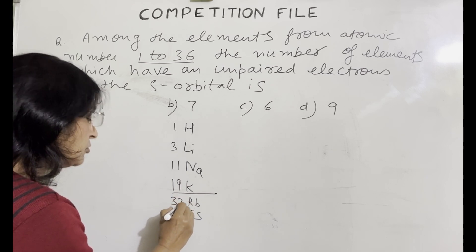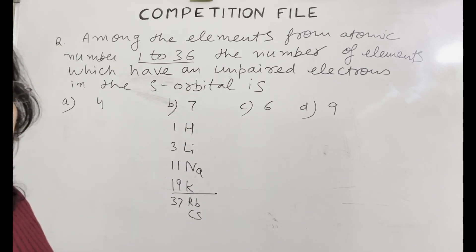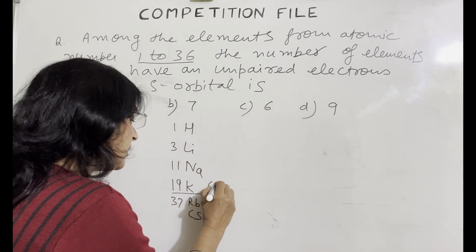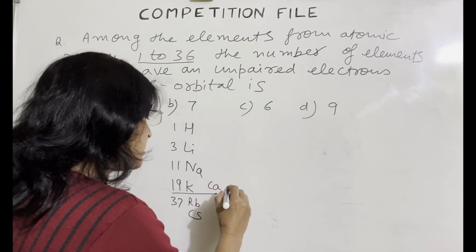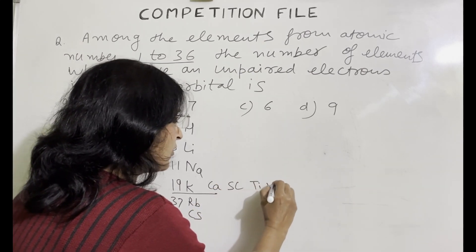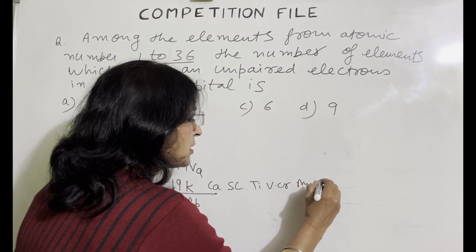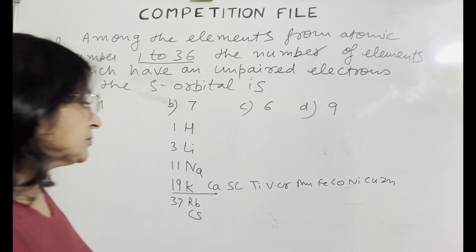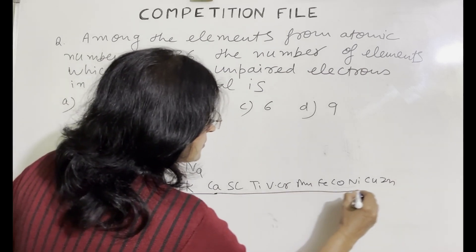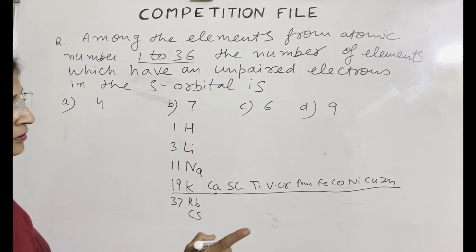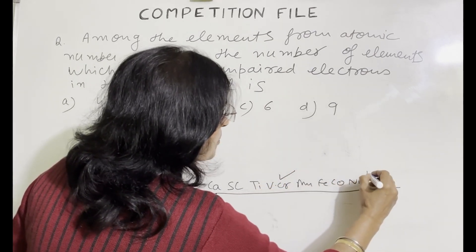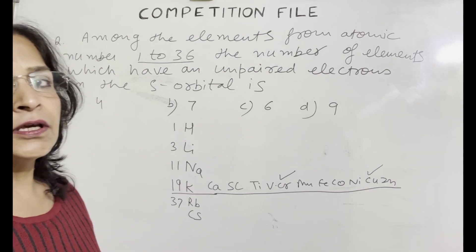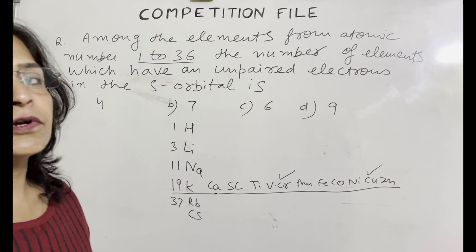So these will be the elements. After potassium comes calcium. After calcium 3D series will come. Scandium, titanium, vanadium, chromium, manganese, iron, cobalt, nickel, copper and zinc. So this is 3D series. In 3D series you have to keep in mind chromium and copper. They have abnormal electronic configuration. And there is one unpaired electron in the s orbital. Which s orbital? 4s orbital.